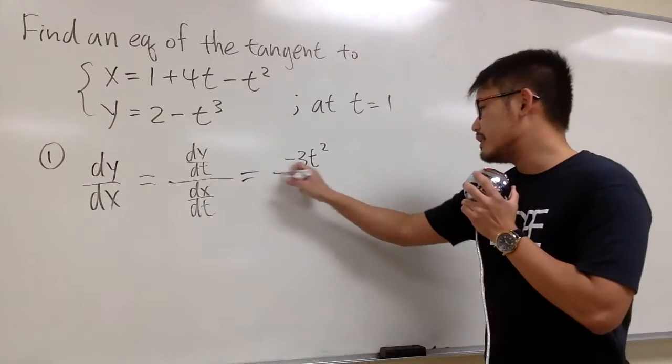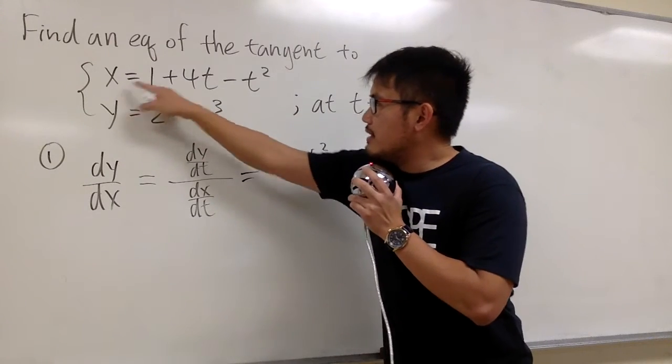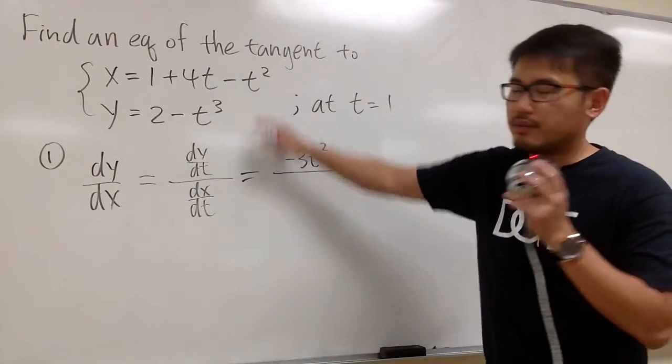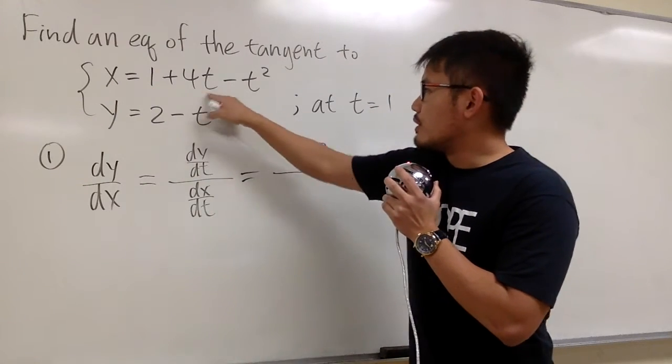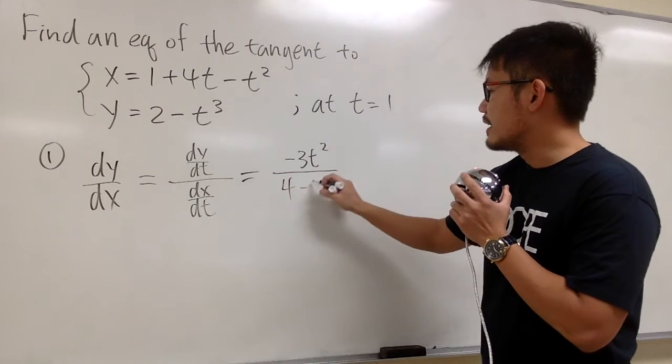And then we divide this by dx/dt, meaning we are going to go to the x equation and then do the derivative. Derivative of 1 is 0, derivative of 4t we get 4, derivative of negative t squared we get negative 2t.